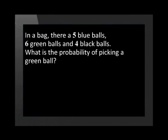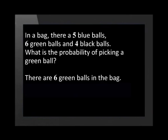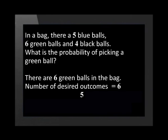Let's look at another example. In a bag, there are 5 blue balls, 6 green balls, and 4 black balls. What is the probability of picking a green ball? Remember, to find the probability of an event occurring, we divide the number of desired outcomes by the total number of outcomes. There are 6 green balls in the bag, so the number of desired outcomes is 6. The total number of possible outcomes equals the total number of balls in the bag: 5 plus 6 plus 4 equals 15 balls.